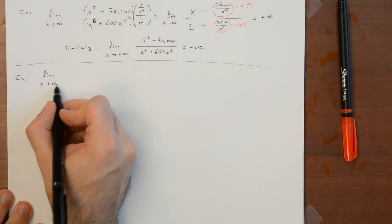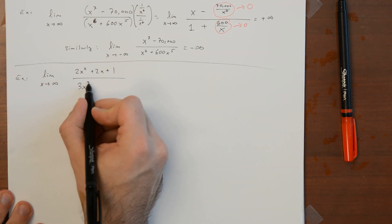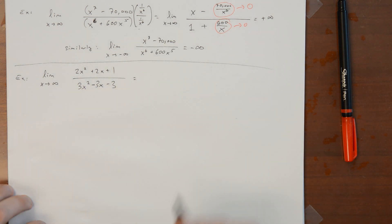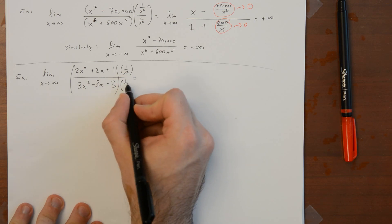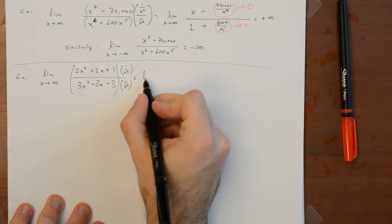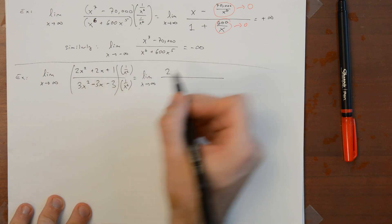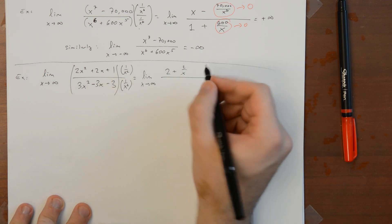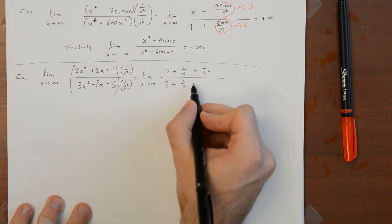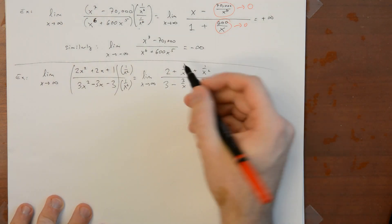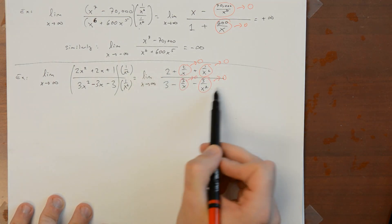Another example: take the limit as x goes to infinity of 2x squared plus 2x plus 1, over 3x squared minus 3x minus 3. The highest power of x in the denominator is 2, so we divide numerator and denominator by x squared. This gives: 2x²/x² = 2, 2x/x² = 2/x, 1/x² = 1/x², and in the denominator 3 minus 3/x minus 3/x². Using the limit laws, each of the 1/x and 1/x² terms goes to 0, so this approaches 2/3.